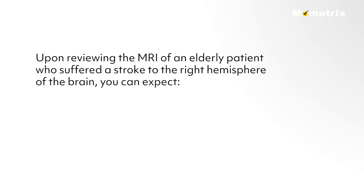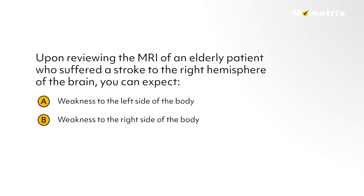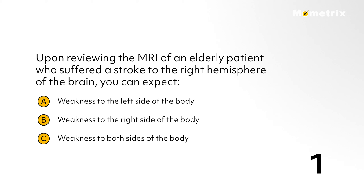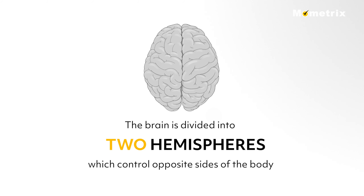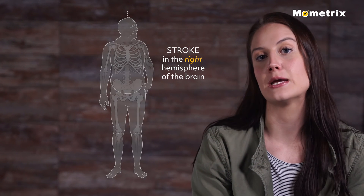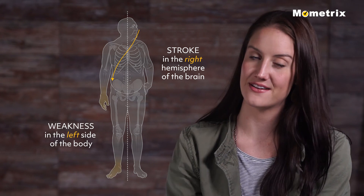Let's test our knowledge using our brain. Question 1: Upon reviewing the MRI of an elderly patient who suffered a stroke to the right hemisphere of the brain, you can expect: a) weakness to the left side of the body, b) weakness to the right side of the body, or c) weakness to both sides of the body. If you answered A, you're correct. The brain is divided into two hemispheres which control opposite sides of the body. Therefore, a stroke in the right hemisphere of the brain will cause weakness in the left side of the body.